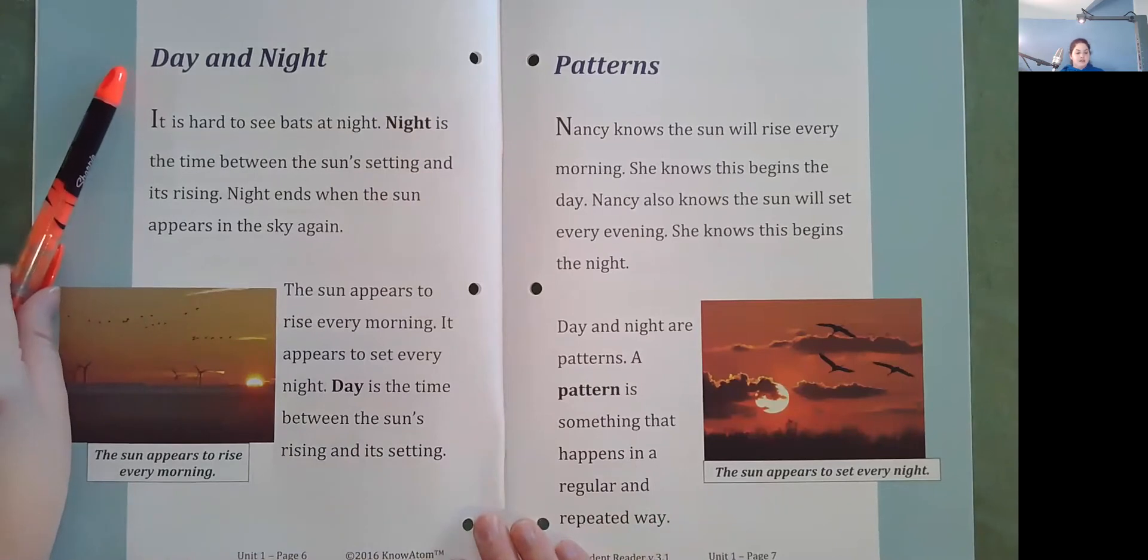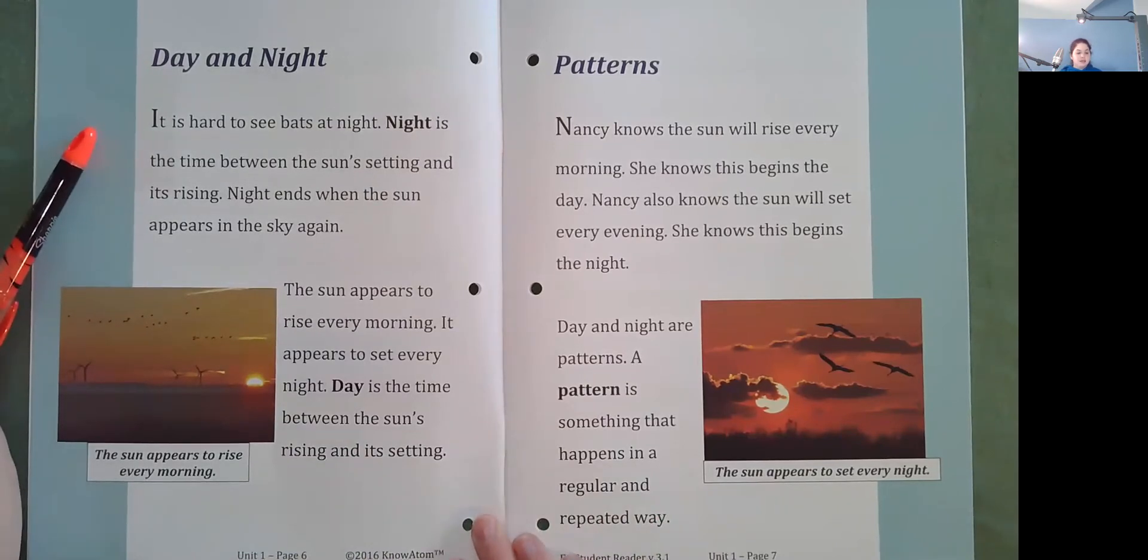Day and night. It is hard to see bats at night. Night is the time between the sun's setting and its rising. Night ends when the sun appears in the sky. The sun appears to rise every morning. It appears to set every night. Day is the time between the sun's rising and its setting.